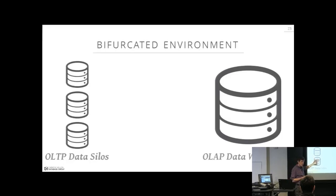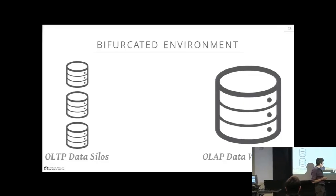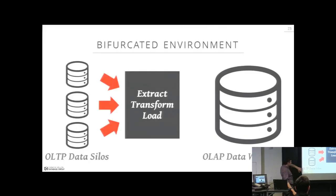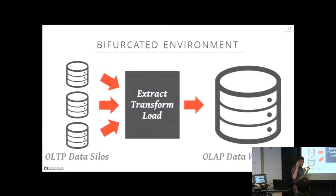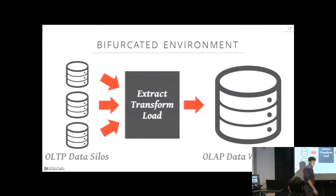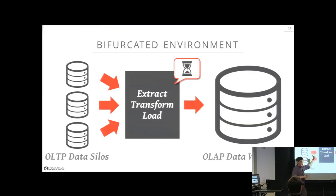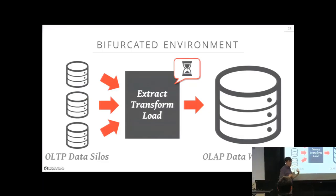The standard architecture to handle this is a bifurcated environment: OLTP data silos on the front end handle new data and transactions, while a back-end data warehouse handles OLAP. Updates are streamed from data silos through an ETL tool — Extract, Transform, and Load — which extracts data from silos, transforms it into a universal schema, and loads it into the data warehouse. For example, eBay removes listings from the website after 90 days because they've been moved from the data silo to the back-end data warehouse. This pipeline can be time-consuming — some companies run it daily, others hourly or every five minutes.